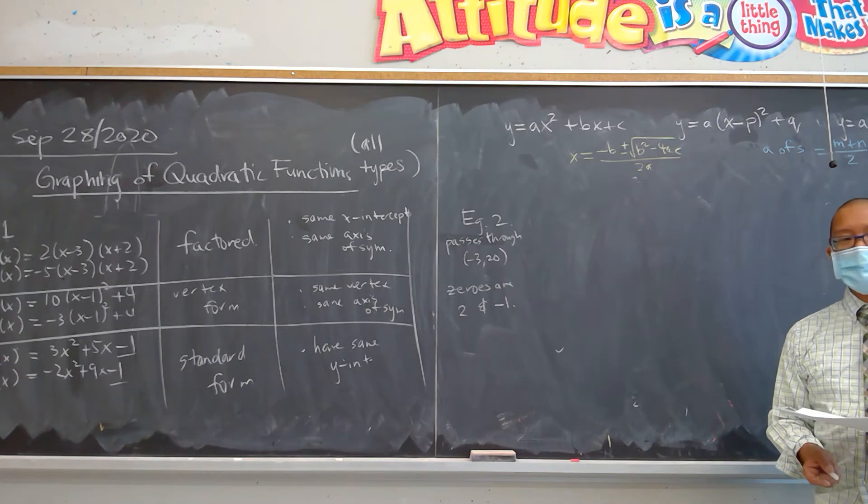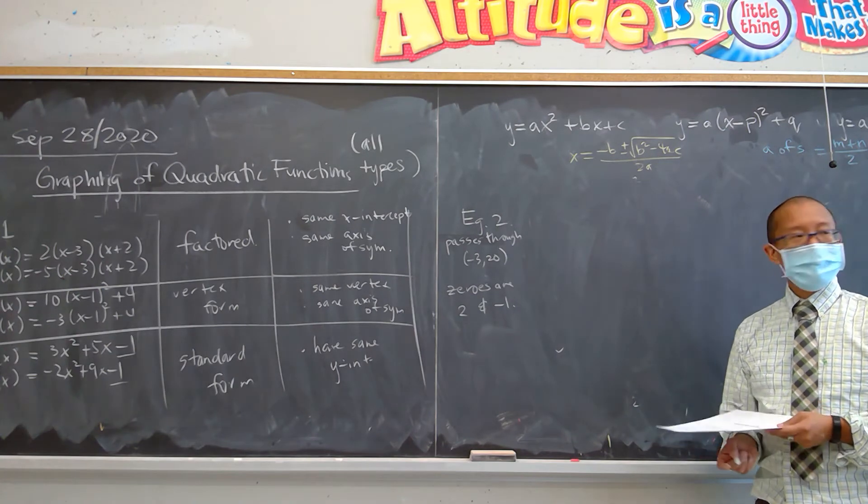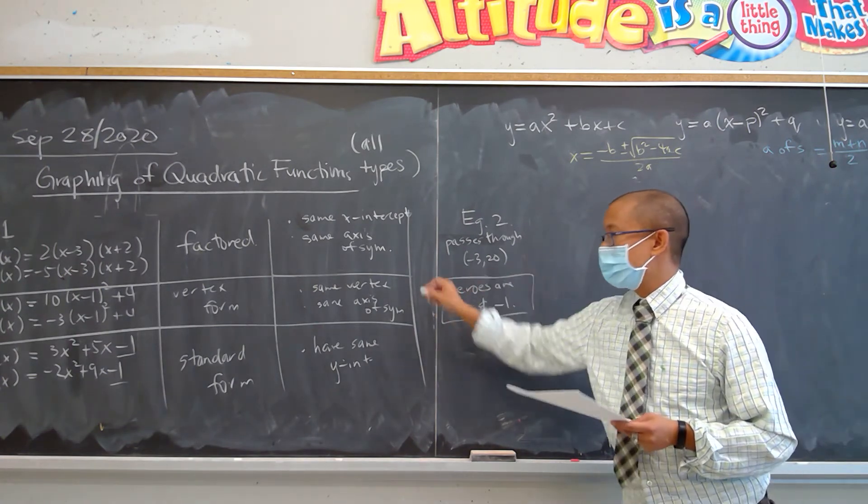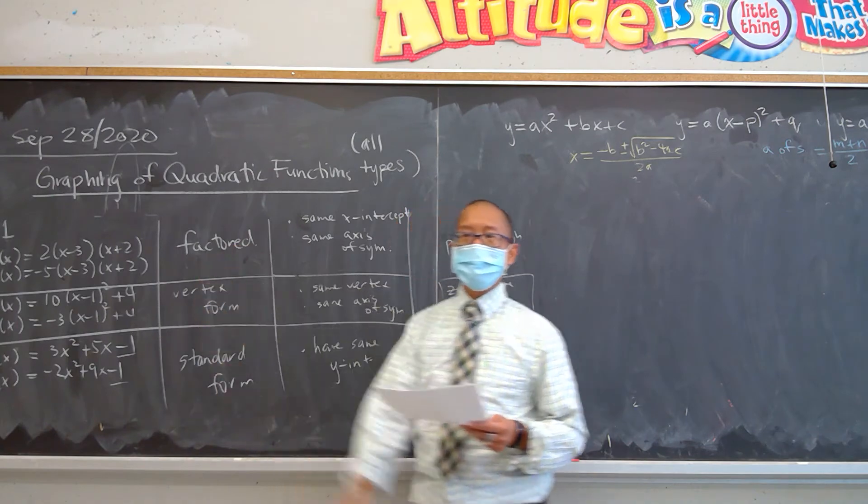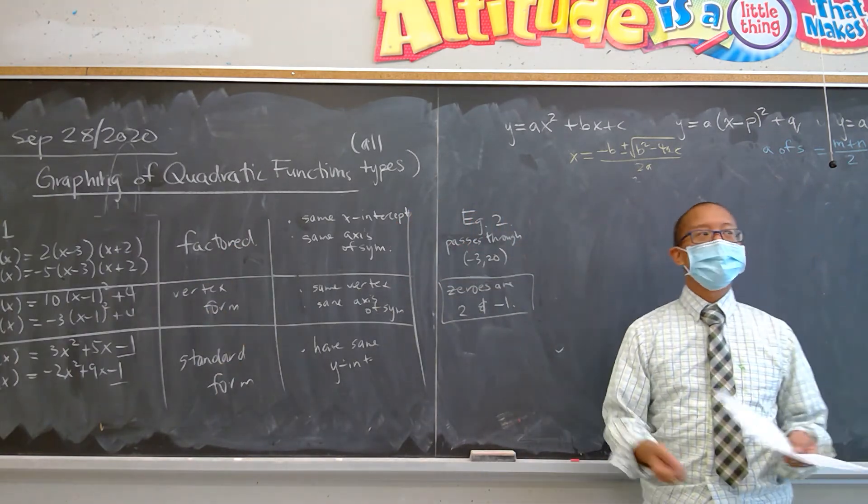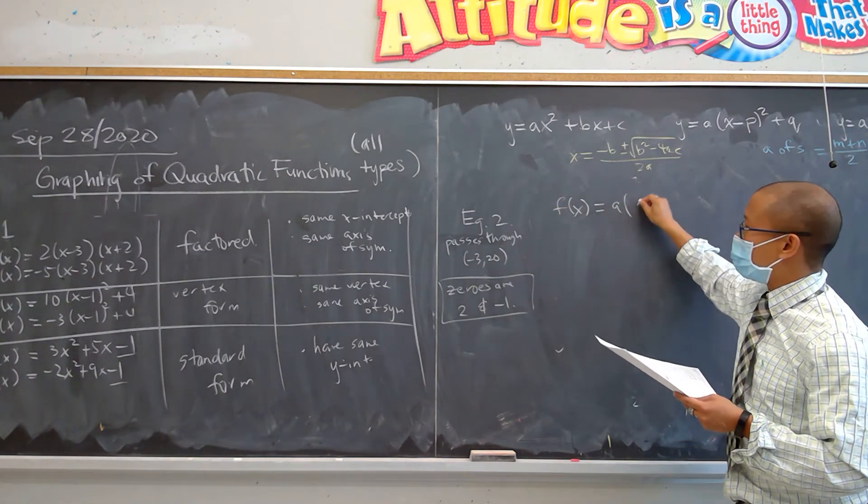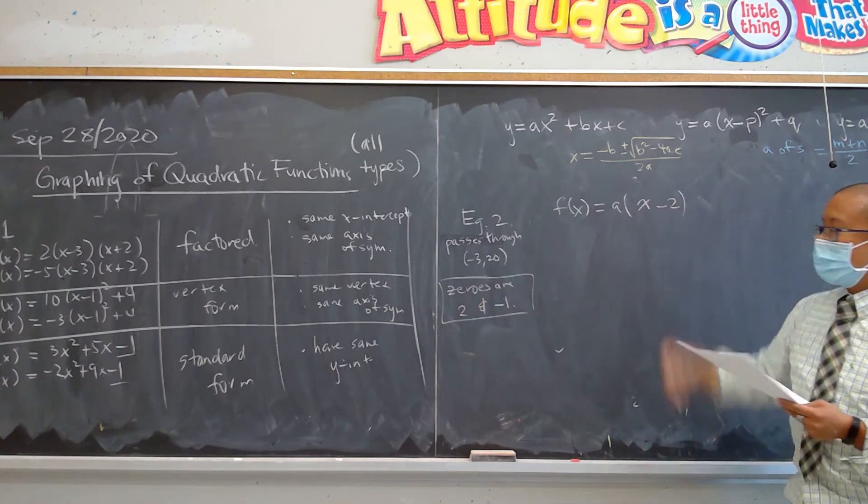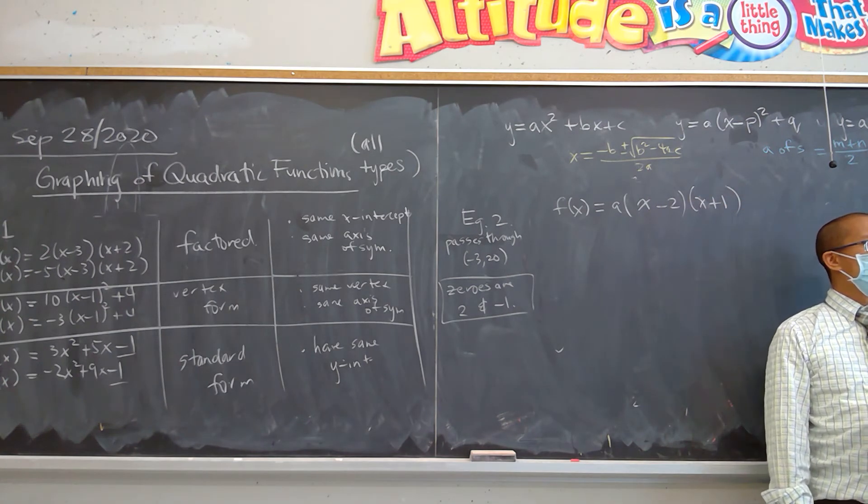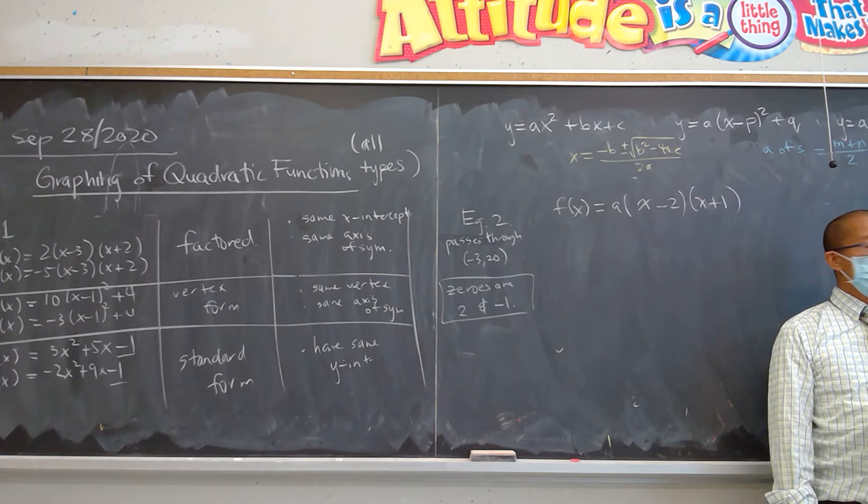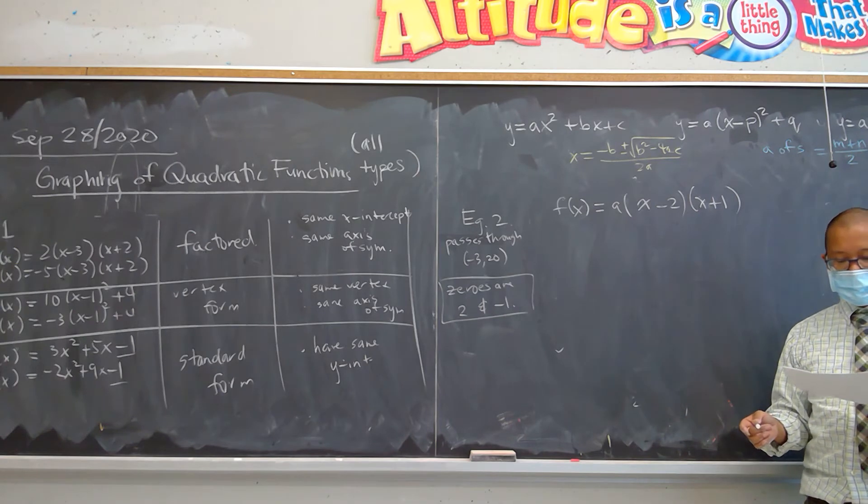Example 2 says determine the equation of the quadratic function in vertex form that passes through negative 3, 20. If its zeros, and if its zeros or roots or x-intercepts are 2 and negative 1, use the information to show a diagram and determine the domain and range. So again, this seems very, a lot of you actually know what you probably should do.